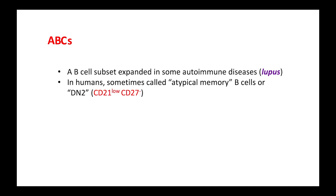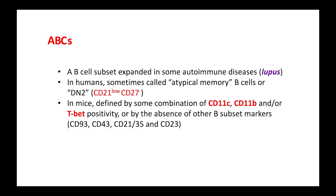In humans, they are sometimes called atypical memory or DN2 B-cells, while in mice they have often been defined by the expression of CD11C, CD11B, and TBET, or by the absence of other subset markers.